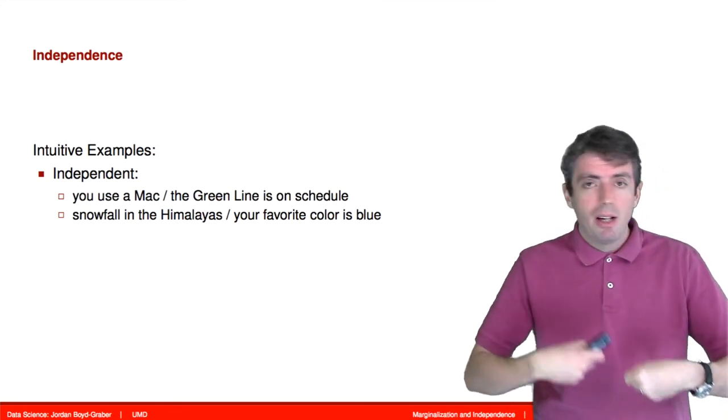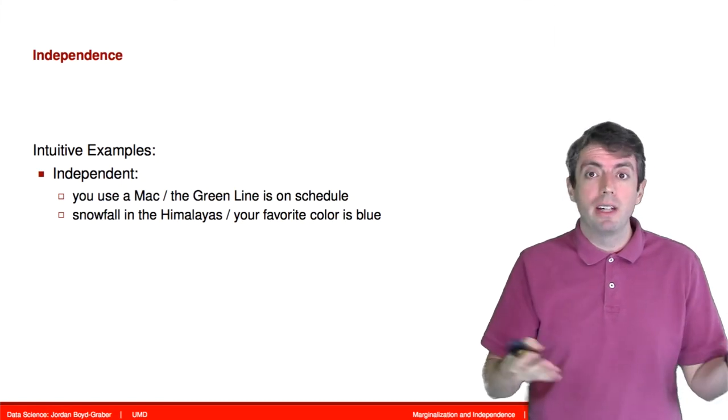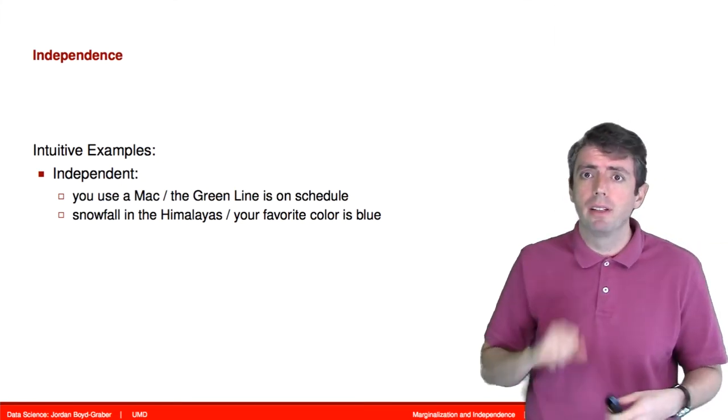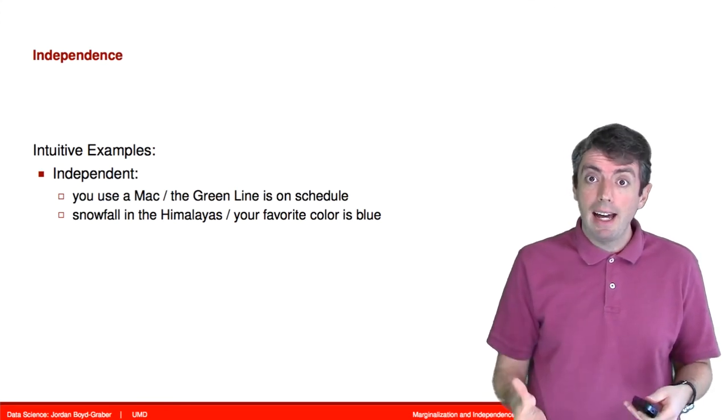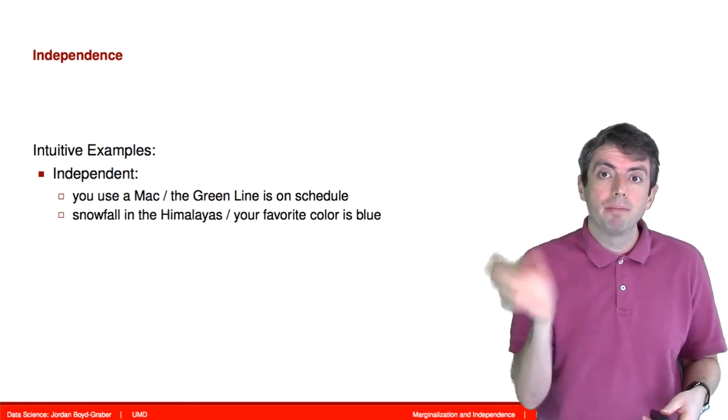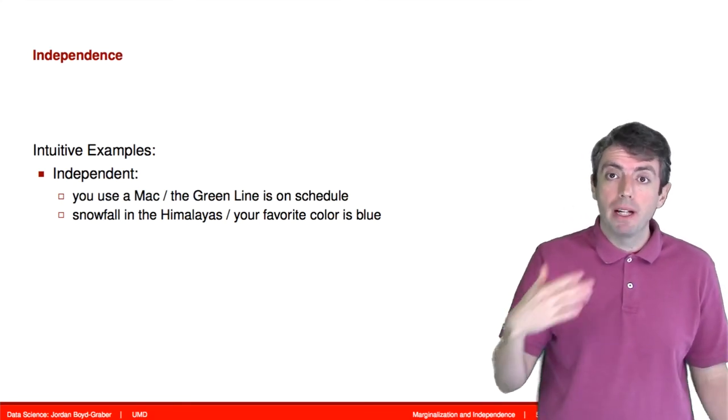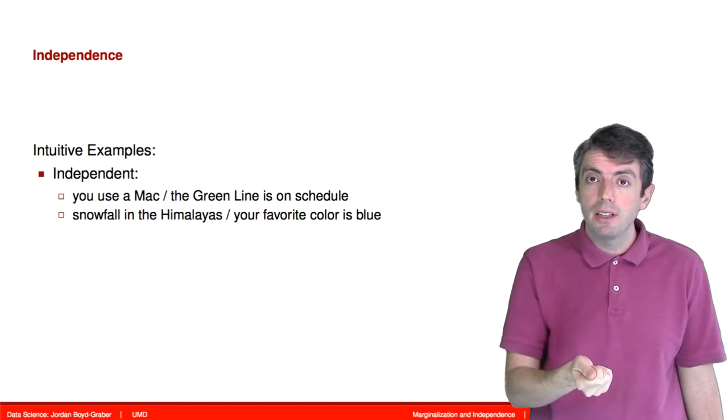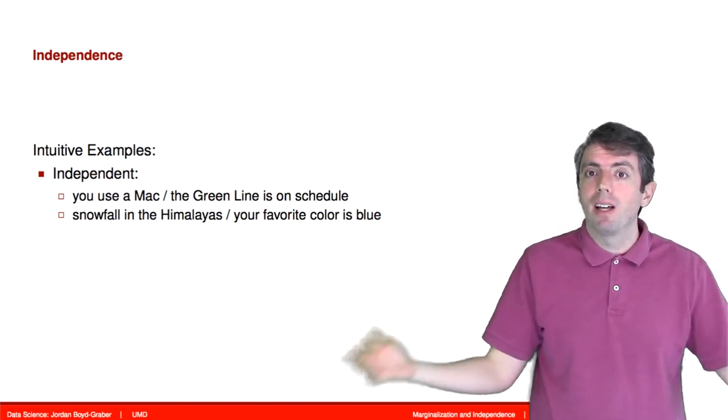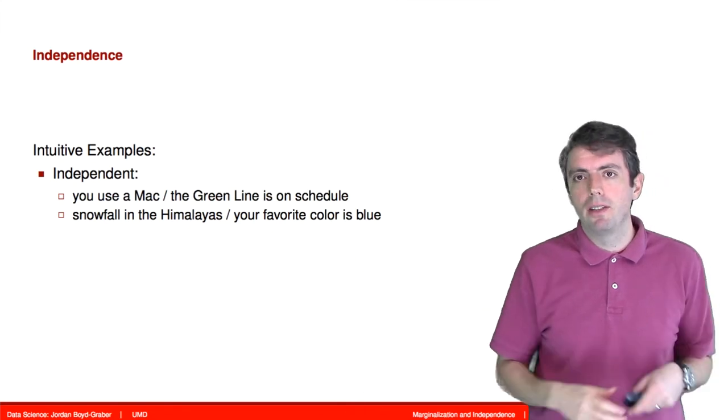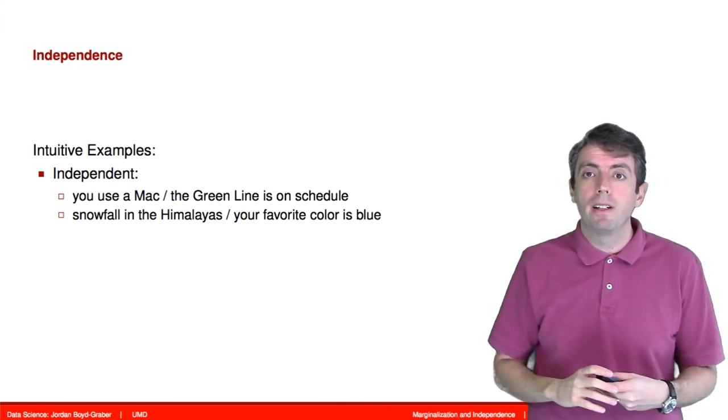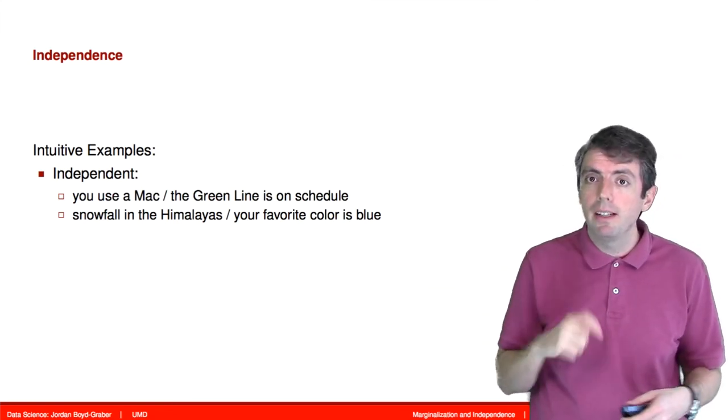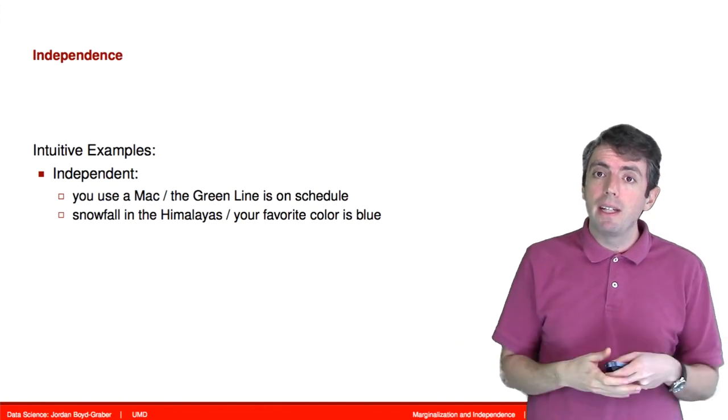And so oftentimes it will be very obvious whether two things are independent. And so if I choose a random person from the university population and ask whether they use a Mac or a PC, or if I pick a random day and ask whether the green line is running on schedule, those two random variables are independent. They have nothing to do with each other. Similarly, if I choose a day and ask what is the snowfall in the Himalayas, or if I ask someone what's your favorite color, those two events have nothing to do with each other. They're going to be independent.